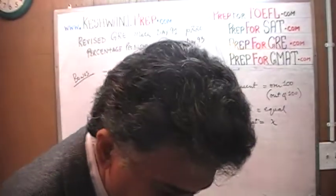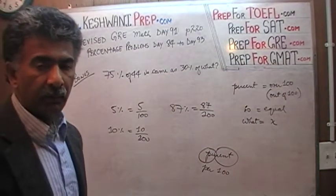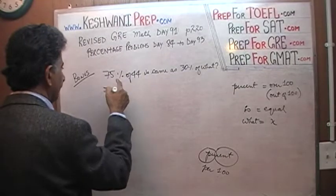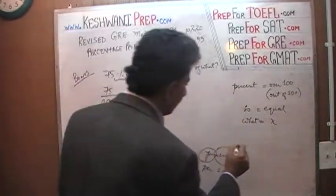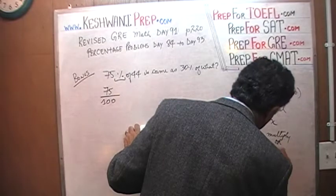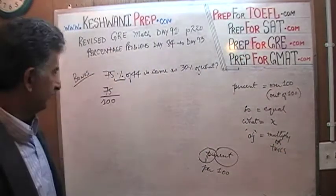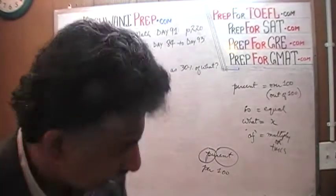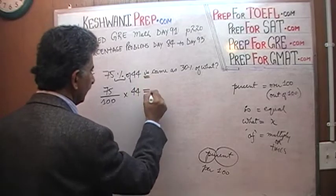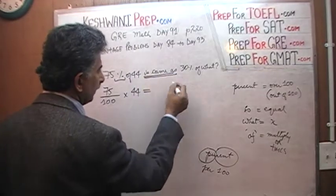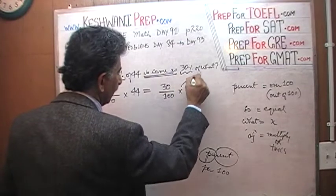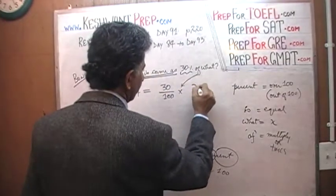We're going to translate everything here, word by word, until an equation emerges automatically. 75% means 75 over 100. Of means times. 44. Is means equal. 30% means 30 over 100. Of means times. Of what? That's your X. There is our equation: 75/100 × 44 = 30/100 × X.